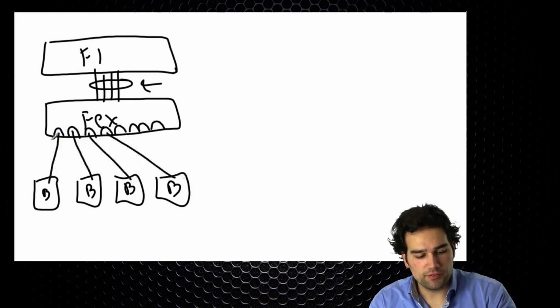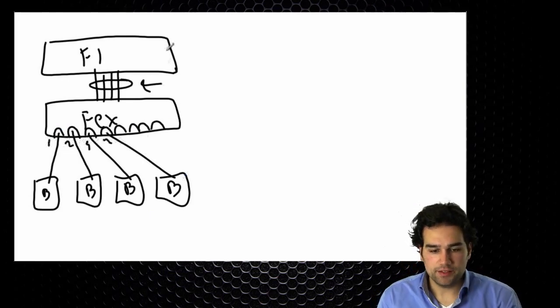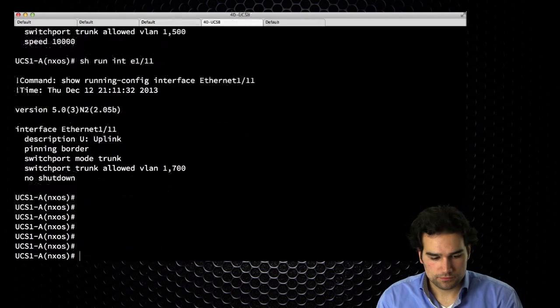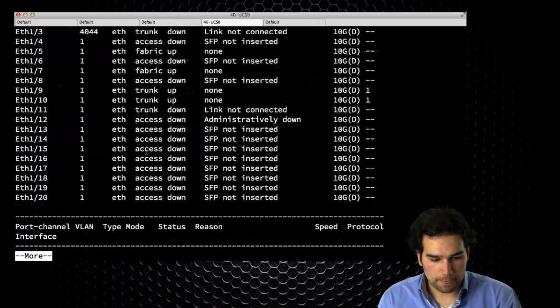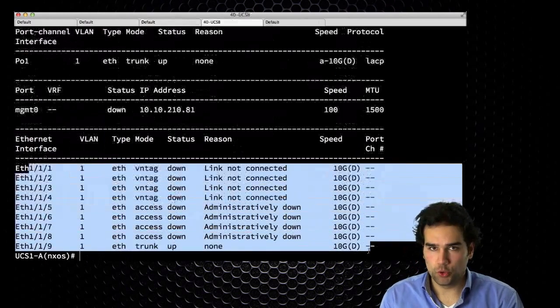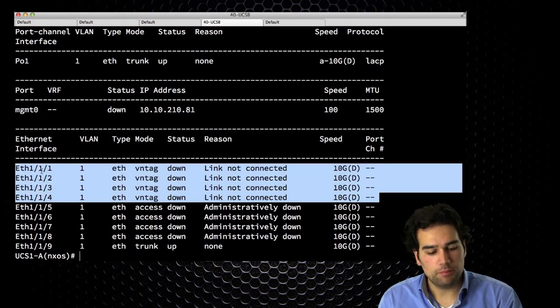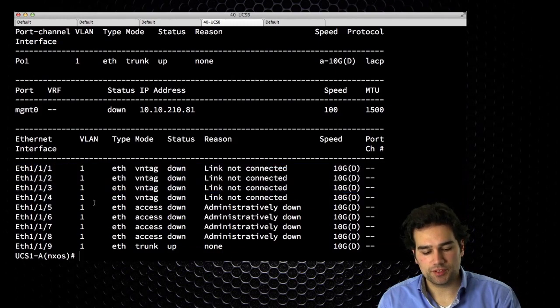So I have an internal port 1, 2, 3 and 4. If I check that on CLI I see that as well. Show interface brief shows me those internal ports going down to blades. So I have four blades in my system that means that I have four different client ports here on the fabric interconnect.